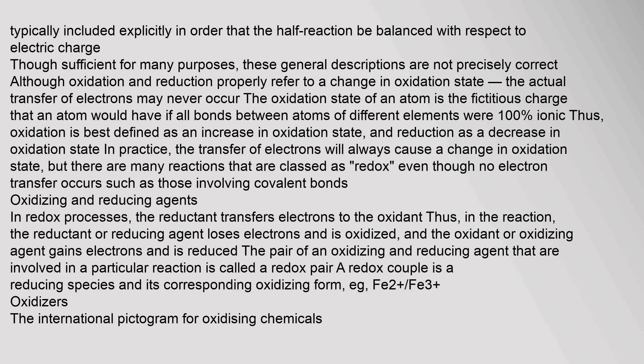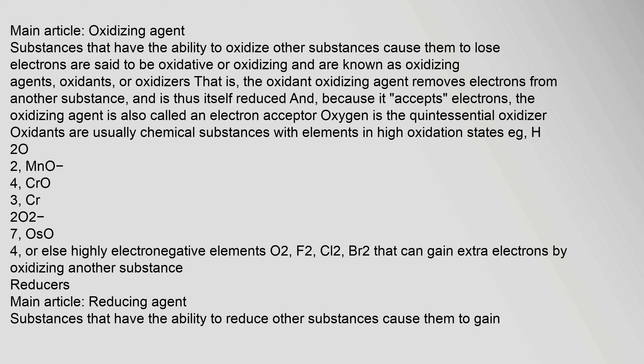In redox processes, the reductant transfers electrons to the oxidant. In the reaction, the reductant or reducing agent loses electrons and is oxidized, and the oxidant or oxidizing agent gains electrons and is reduced. The pair of an oxidizing and reducing agent involved in a particular reaction is called a redox pair. A redox couple is a reducing species and its corresponding oxidizing form, e.g., Fe2+/Fe3+. Substances that have the ability to oxidize other substances — causing them to lose electrons — are said to be oxidizing and are known as oxidizing agents, oxidants, or oxidizers. The oxidizing agent removes electrons from another substance and is itself reduced; because it accepts electrons, the oxidizing agent is also called an electron acceptor. Oxygen is the quintessential oxidizer.